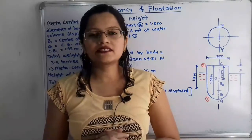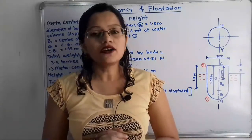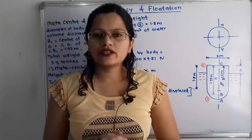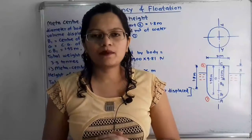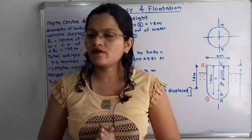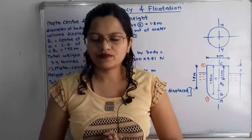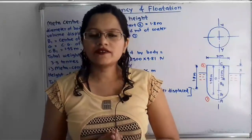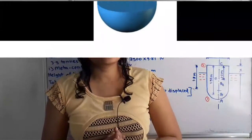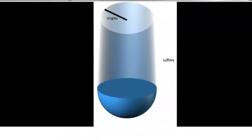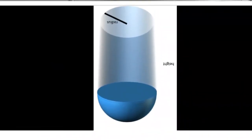Hello friends, this is Priyanka. Today we are going to solve a problem on buoyancy and flotation. In this video we are going to find out the metacentric height of the combined body — that is a cylinder attached with a curved surface at the base.